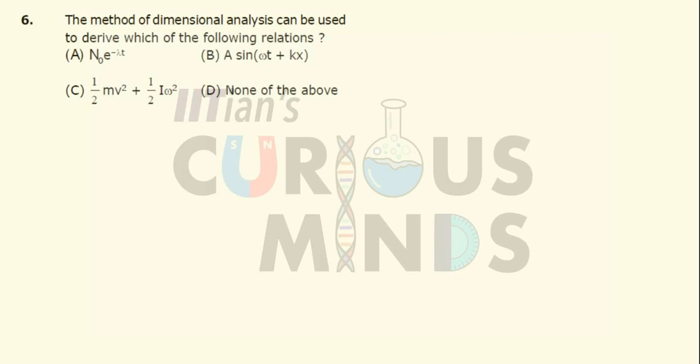The method of dimensional analysis can be used to derive which of the following relations? First of all, the dimensional analysis can only be used whenever there are linear relations, like if I say that a is directly proportional to b squared, c raised to 1 by 3, and so on.